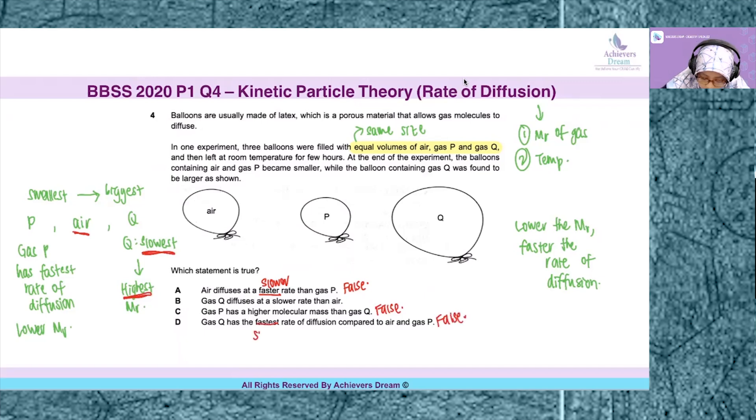So let me make the amendment or the right term that we should be saying gas P has a lower molecular mass. The answer is B.